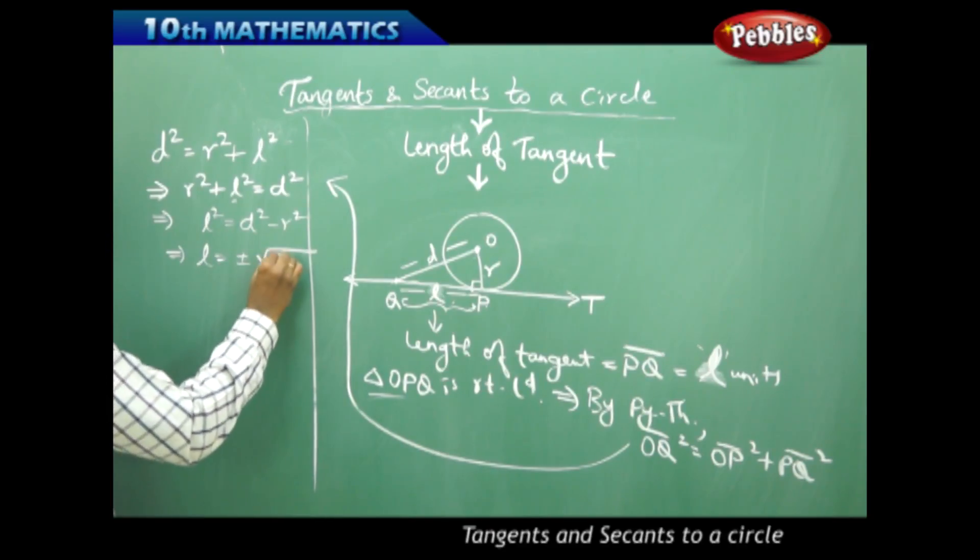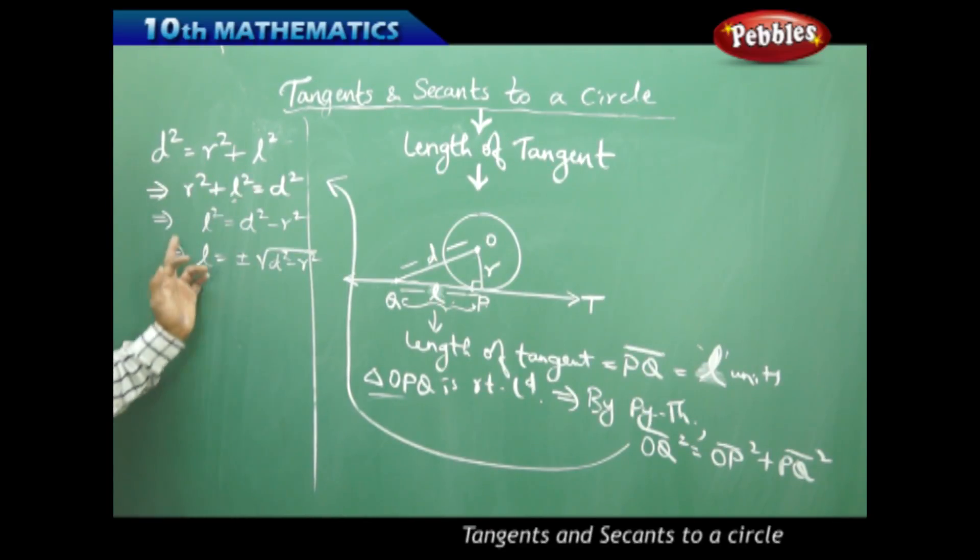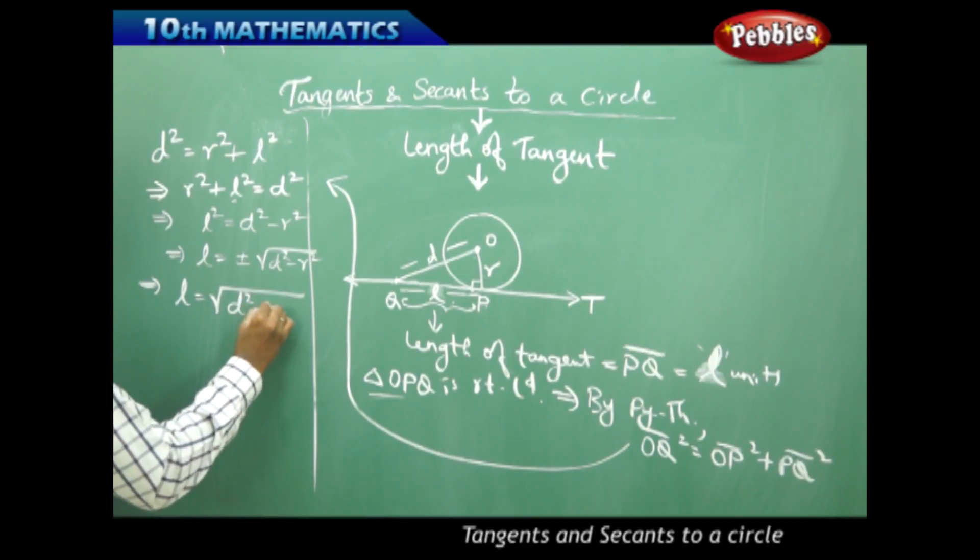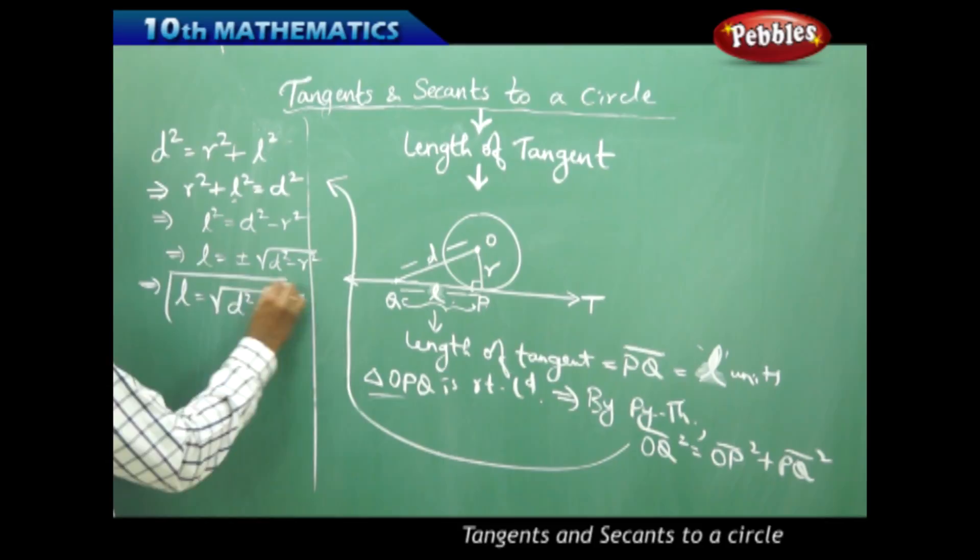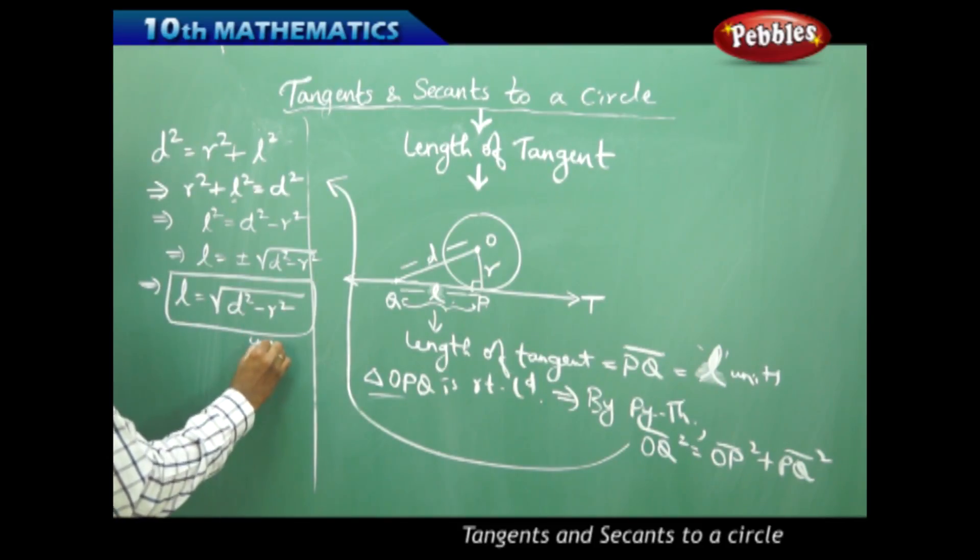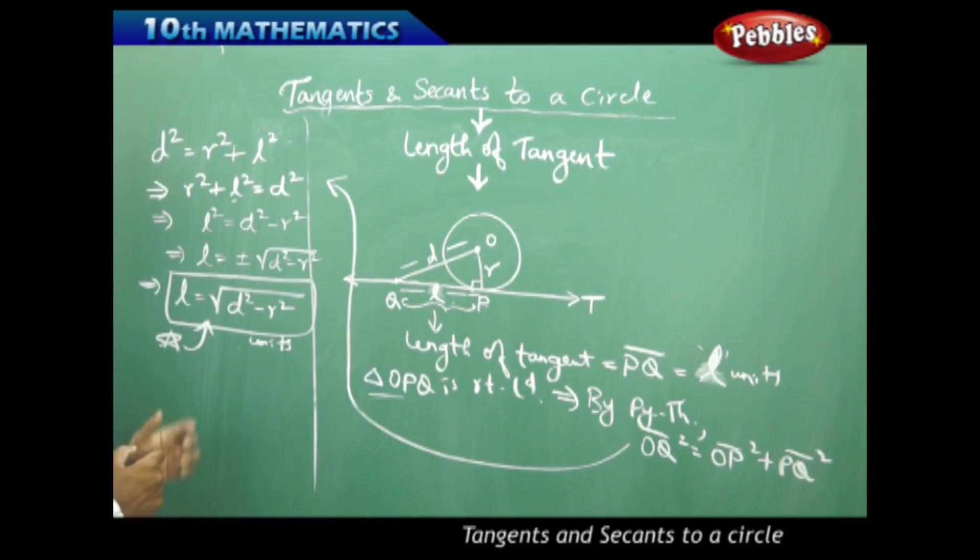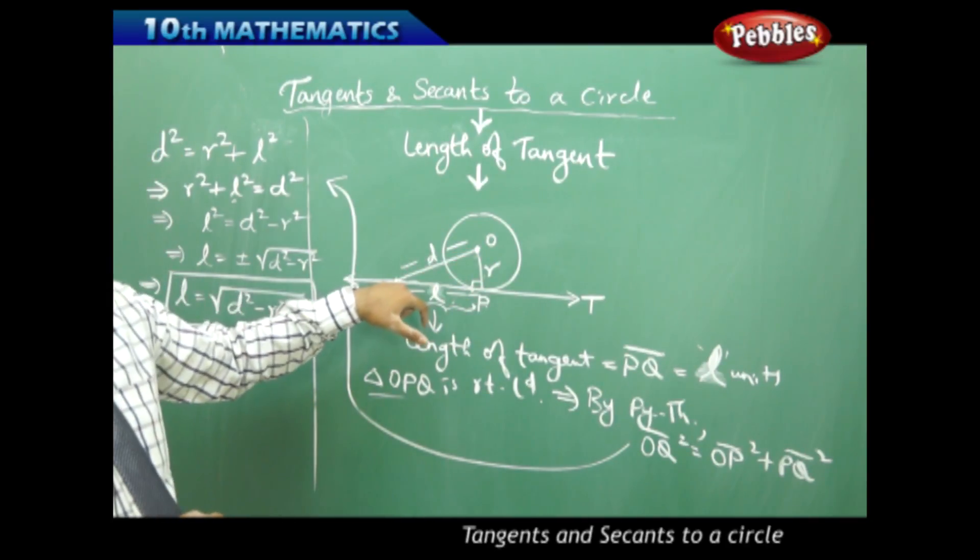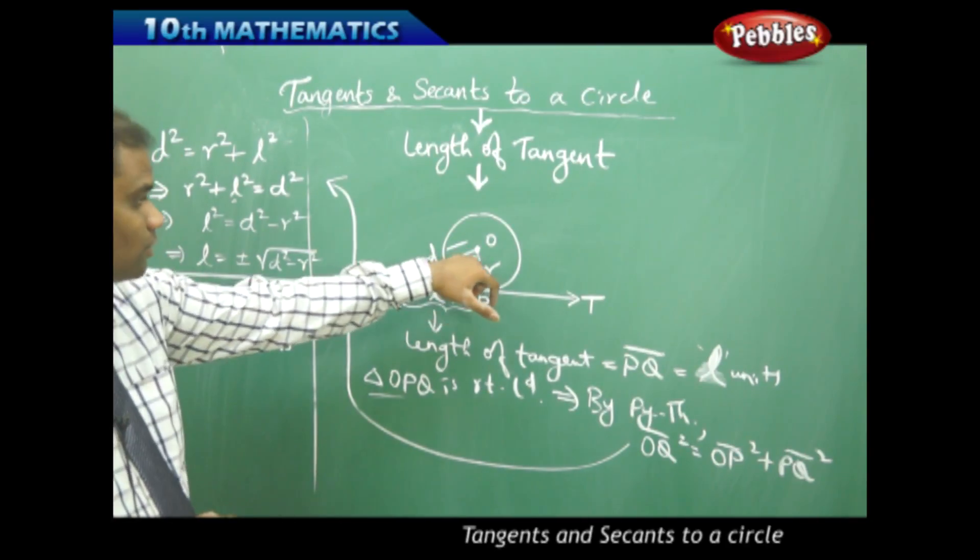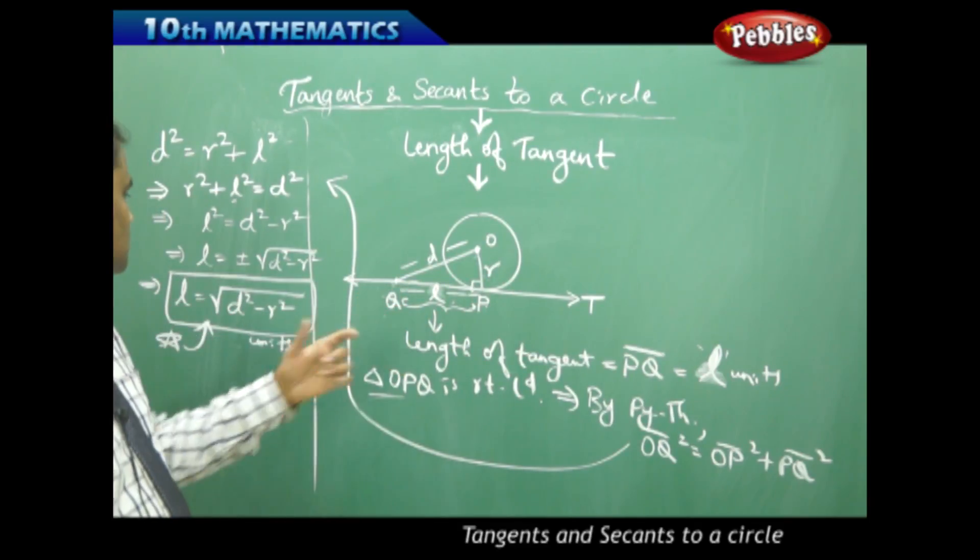That implies L is plus or minus root of D squared minus R squared coming as the root, but I don't take the negative value because length cannot be negative. Therefore taking the positive value, L is root of D squared minus R squared units. So the length of tangent is given by the formula root of D squared minus R squared, where D is the distance from center of circle to the point outside the circle...